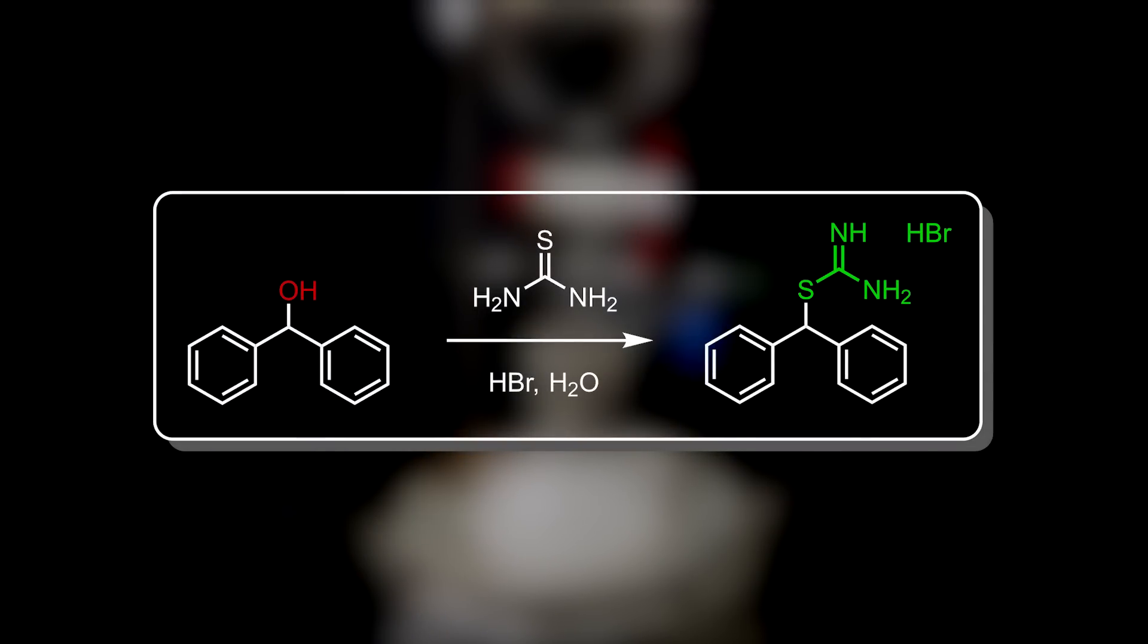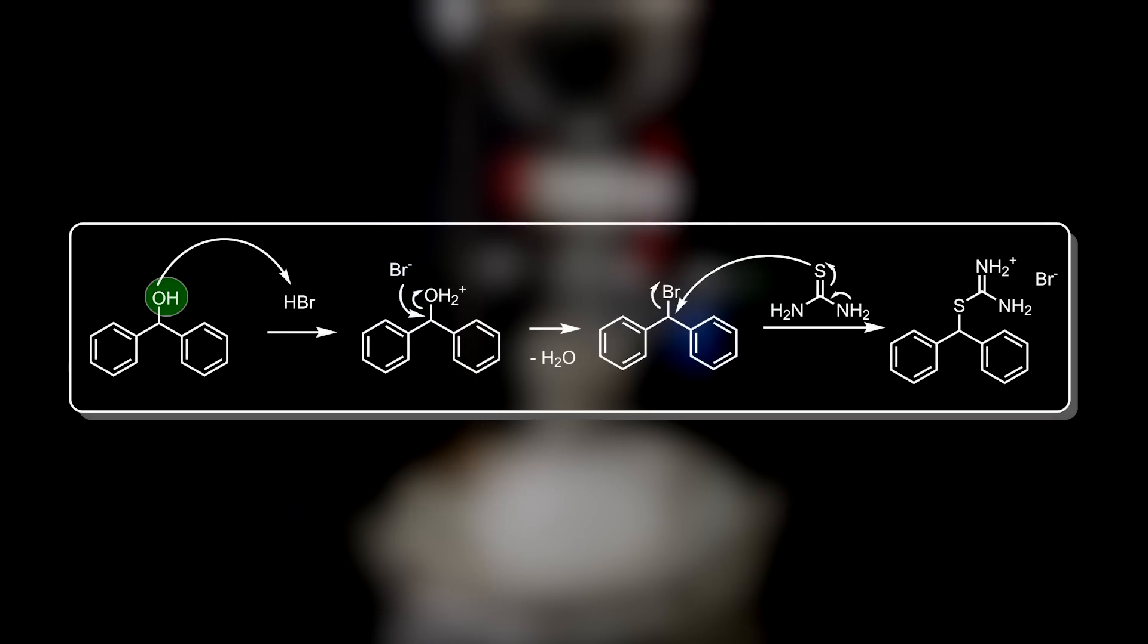First, the hydroxyl of diphenylmethanol is protonated by the acid and rapidly undergoes nucleophilic substitution to form the corresponding bromide compound. This can then be attacked by the nucleophilic sulfur of thiourea, moving an electron pair onto the sulfur, while one of the nitrogens moves its free electron pair to form a double bond to make up for it. It kicks off the bromide and leaves us with the final amidinium product.